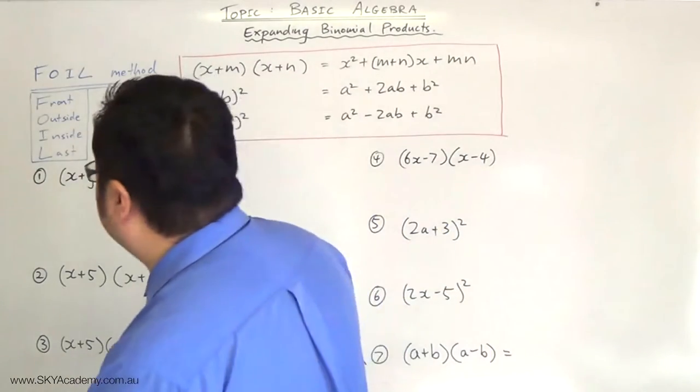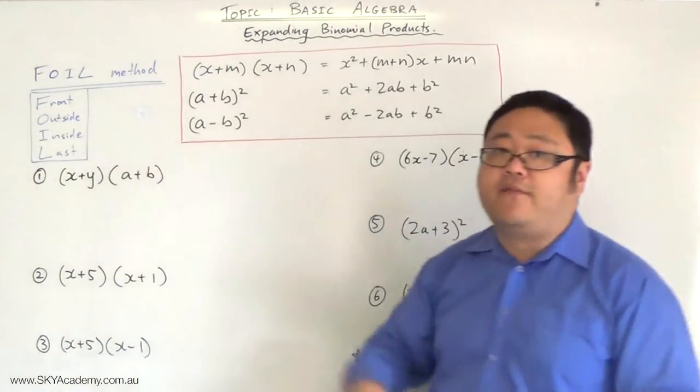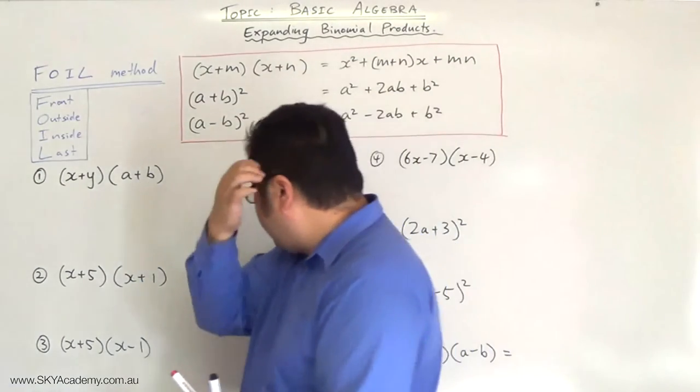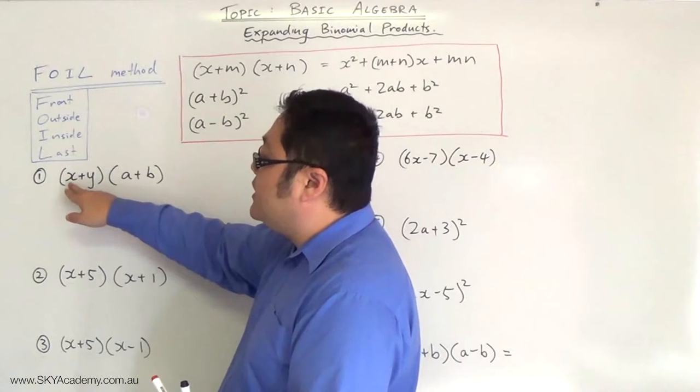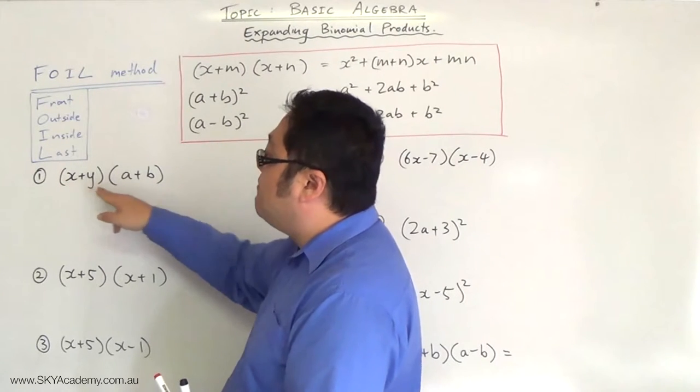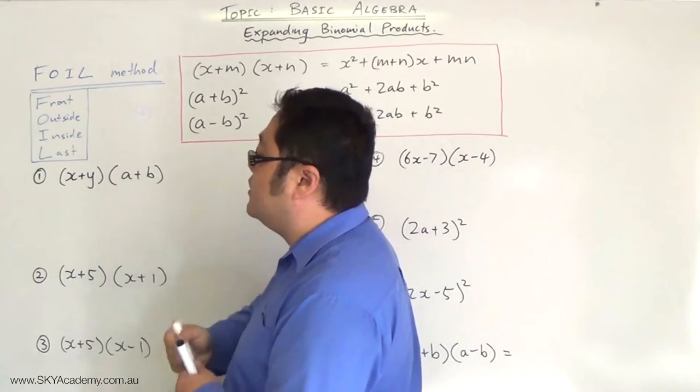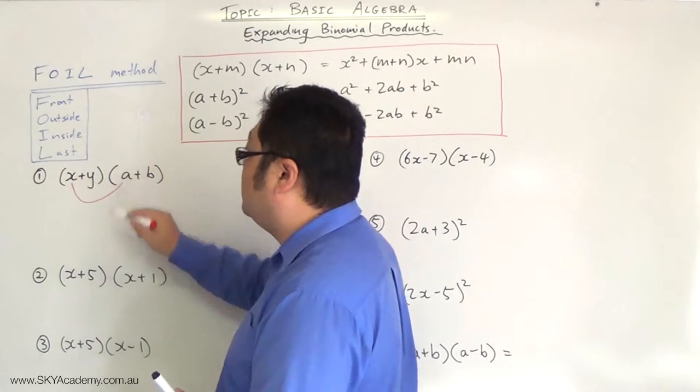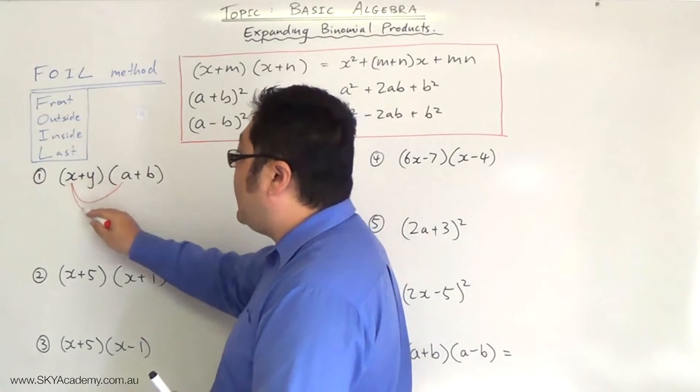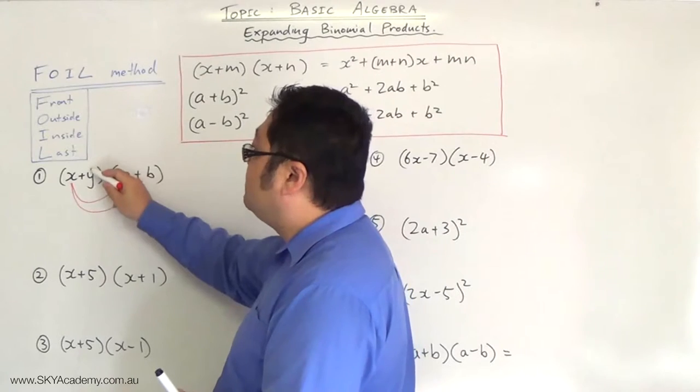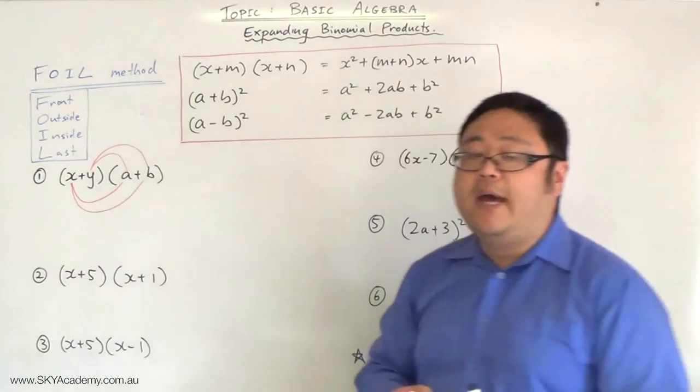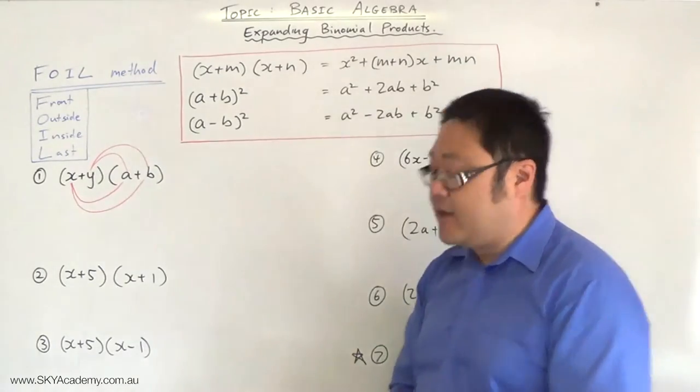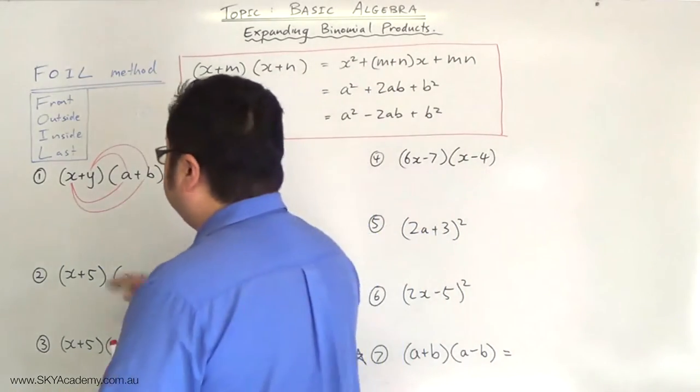When you've got a binomial expansion, and we'll work through the first example here, what you're doing is taking the first term and multiplying it with the front of the other term, so you're multiplying the front two. Then you're multiplying by the outside two, then by the inside two, and then by the last two, adding them all together. So let's work that out.